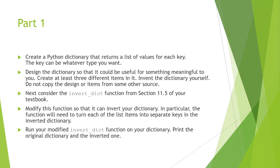At the end we want to invert the dictionary itself. Don't copy the design from another source — try to come up with it yourself. The goal is to modify the function so that you can invert your dictionary. In particular, the function will need to turn each of the list's items into separate keys in the inverted dictionary. You'll run the modified invert dictionary function on your dictionary and print both the original and the inverted one.